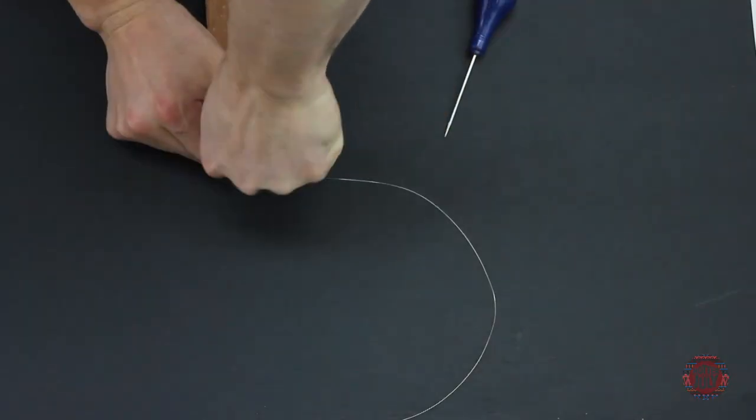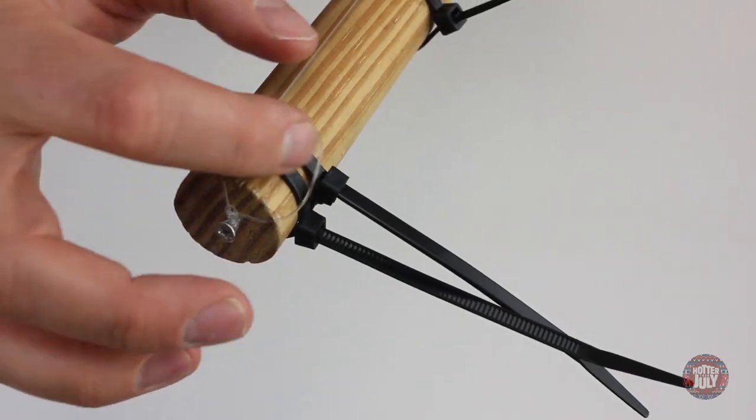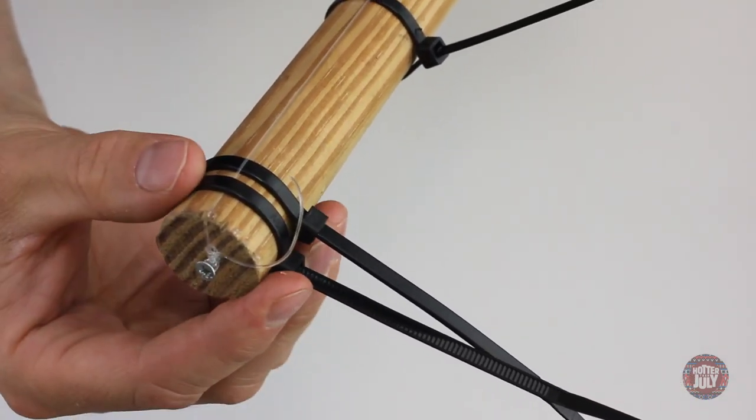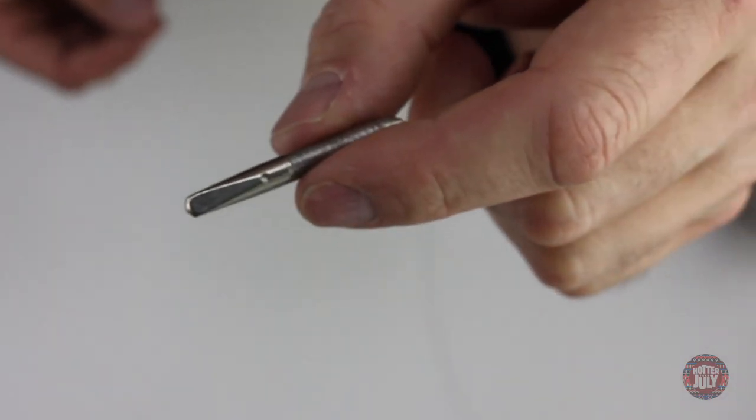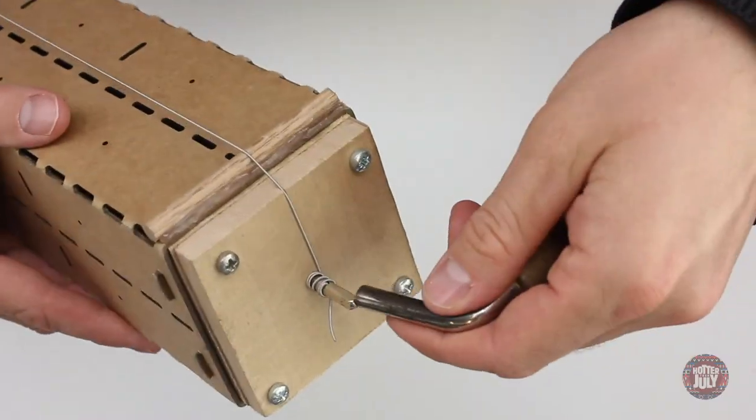Next, the other end of the string must be secured. The simplest instruments, like the ones shown shortly, can simply be tied at this end also, but there are a variety of mechanisms available for this purpose. Zither pins are a type of fine threaded screw that are hammered into wood and can be finely adjusted with a tuning wrench.